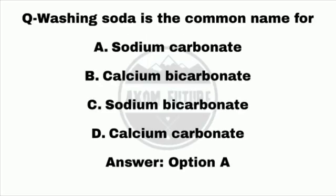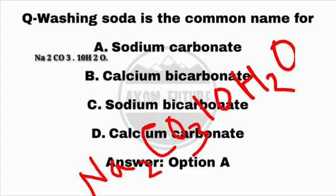Question 14: Washing soda is the common name for option A, sodium carbonate. Its formula is Na2CO3·10H2O.